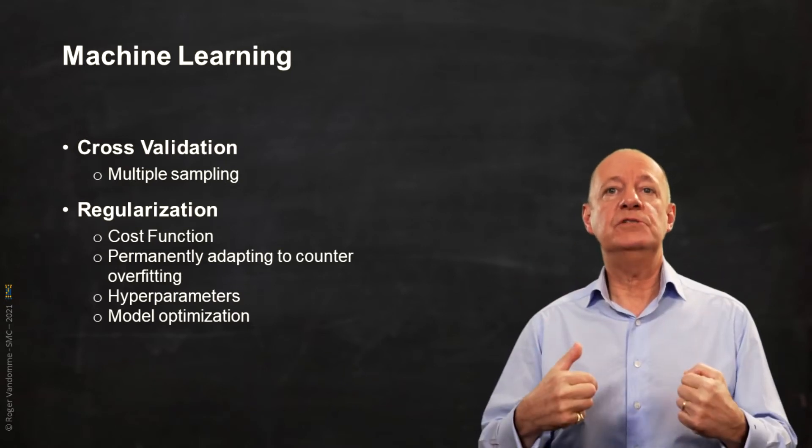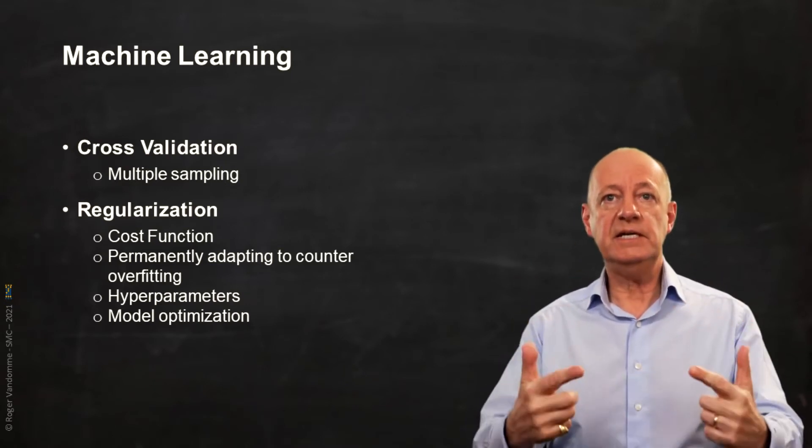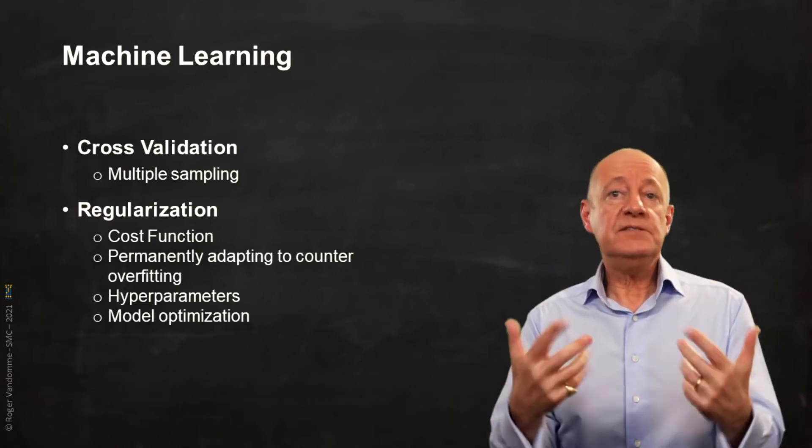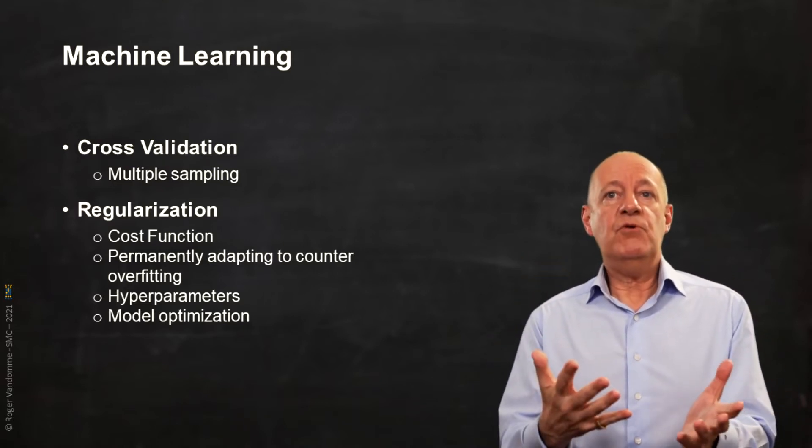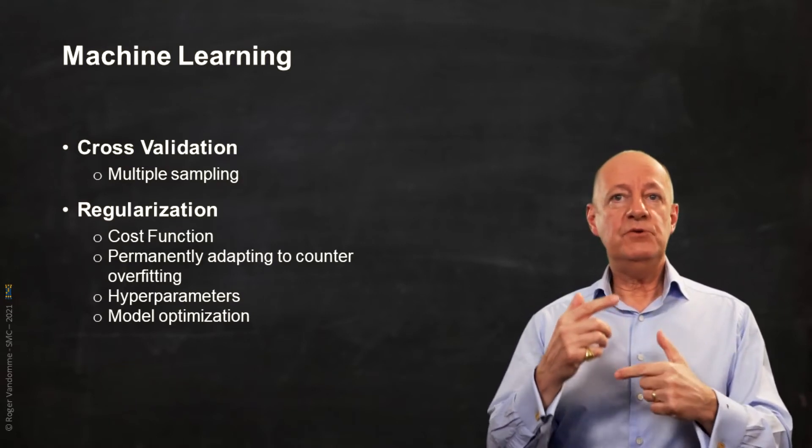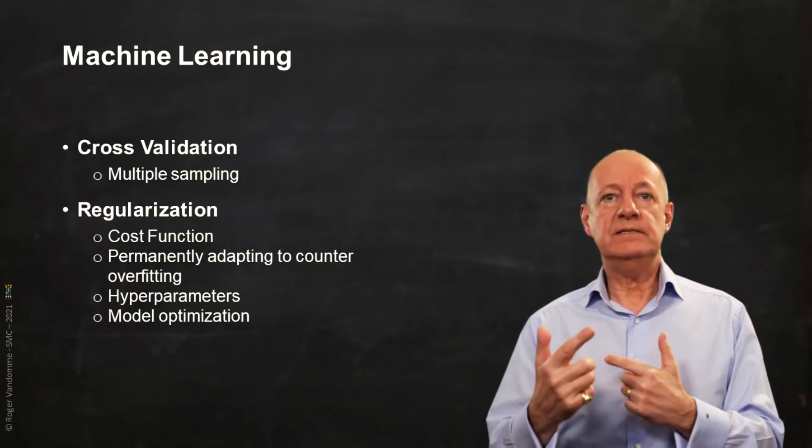We then go back to our original work base and start again with another random test sample that will necessarily differ and therefore we will also get a different model. This step will be repeated 5 to 10 times.